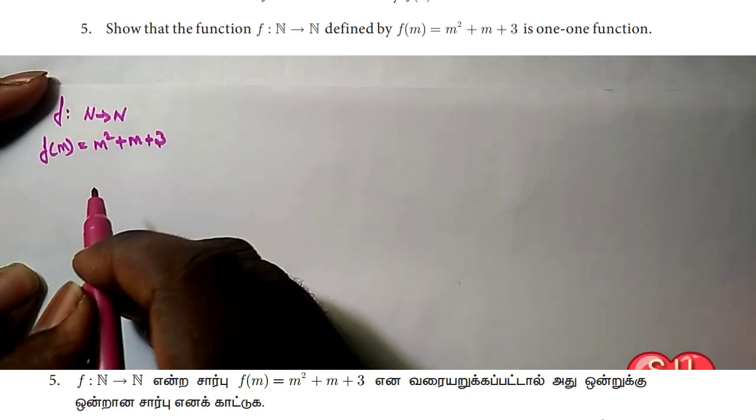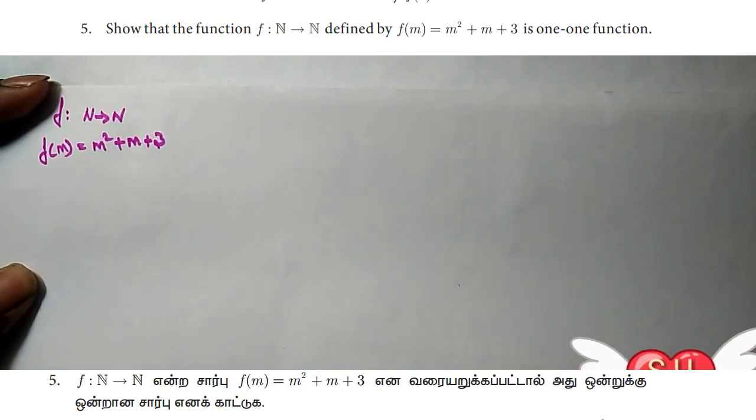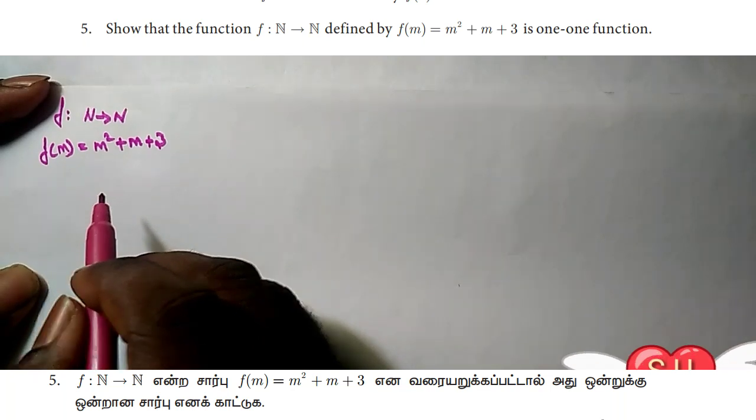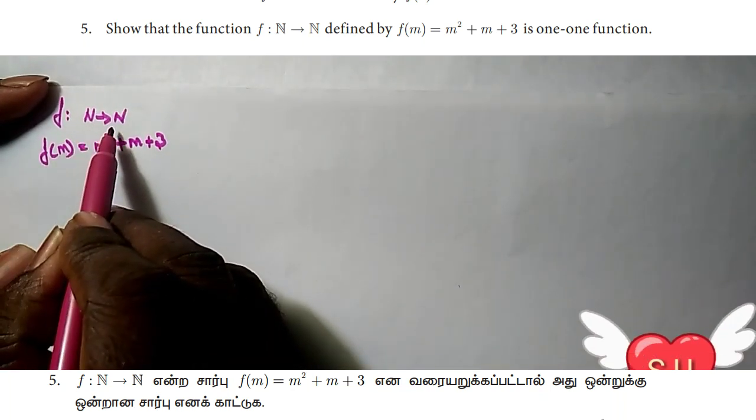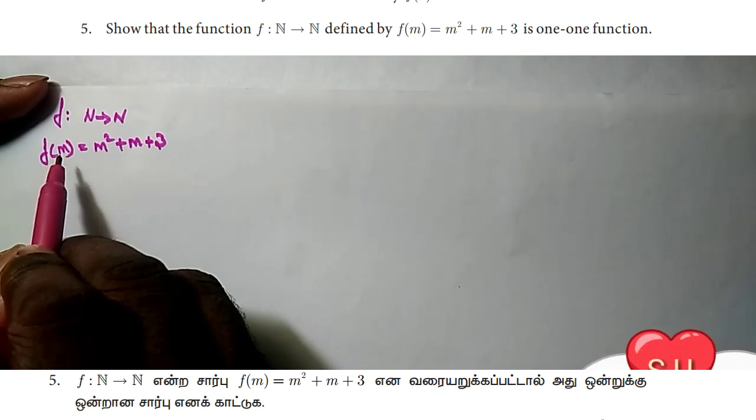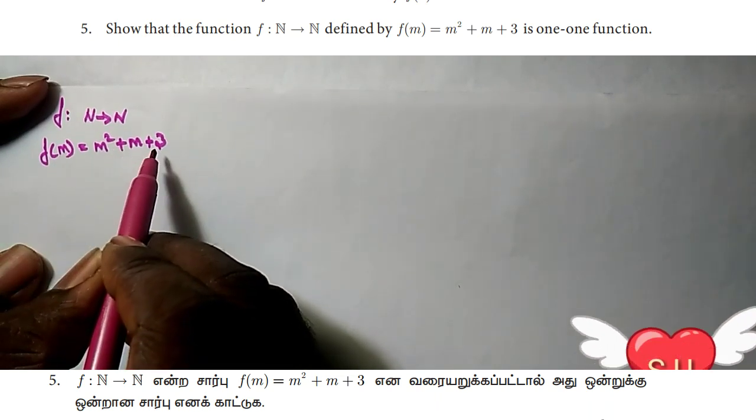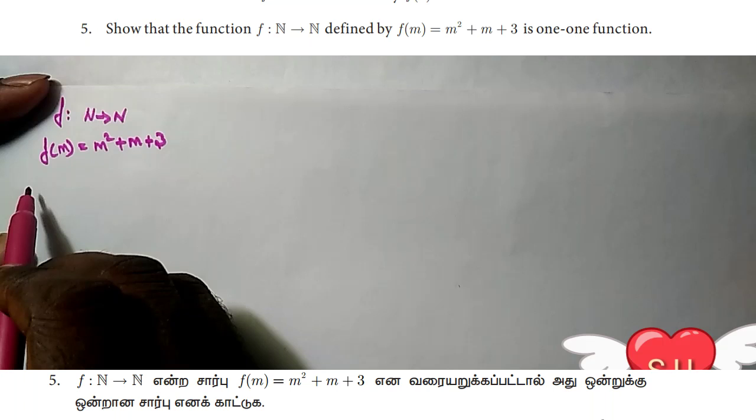Hi friends, welcome, this is Sacky. In this video, we will check exercise 1.4. We will see the function f: N → N. The function is f(m) = m² + m + 3. So first,